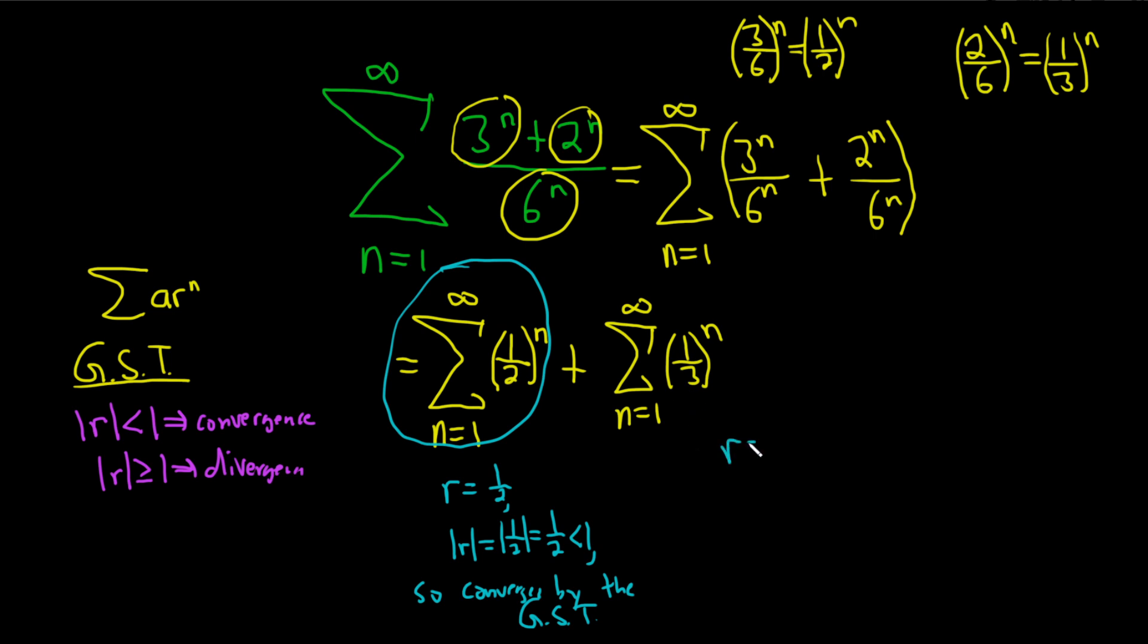We can do the same thing here with this one. r is 1 third. And so the absolute value of r is equal to 1 third, which is less than 1. So it also converges by the geometric series test. So this one also converges. So because they both converge, the sum converges.